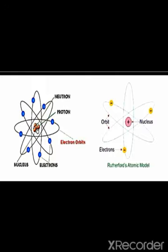So this was Rutherford's model of atom. This model replaced the plum pudding model. This is the way Rutherford described the nucleus and protons in the atom.